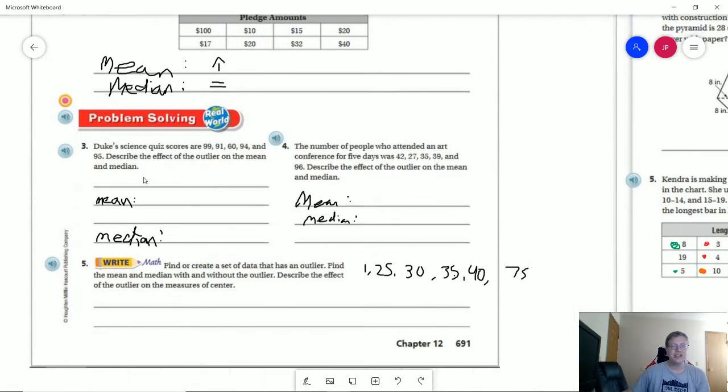Number three we have a science quiz. Our outlier is going to be 60 which is lower than the rest of our numbers. So that is going to lower the average or mean and then the median is going to be different as well.